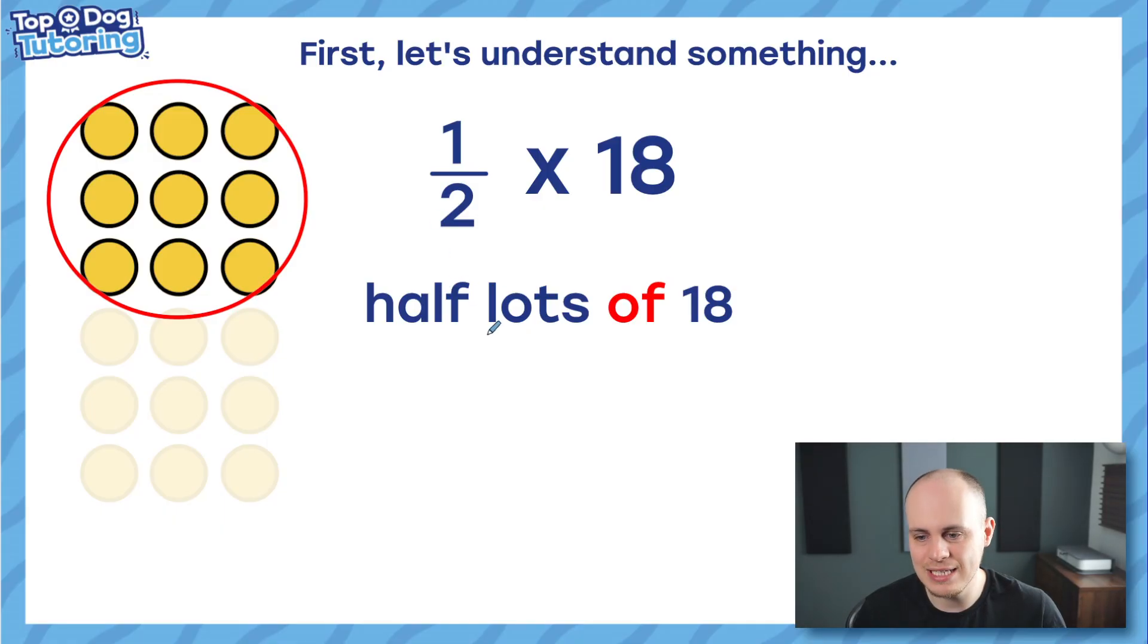But at this point, the phrase lots of sounds a bit strange to me. And what I'm going to do when I'm working with fractions like this, rather than saying half lots of 18, I'm just going to say half of 18. And hopefully you're now making that link as to why sometimes people see the multiplication symbol as the word of. That's where it comes from. It comes from the whole lots of phrase. So really, this question half times 18 to me just says half of 18, which is very clearly nine.